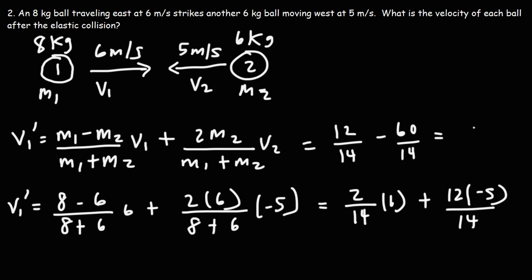So this is going to be 12 minus 60 is negative 48. Negative 48 divided by 14, that will give us this answer, which is negative 3.43 meters per second. So that is the final velocity of the first ball.